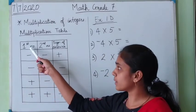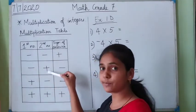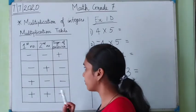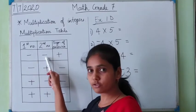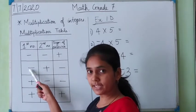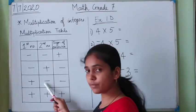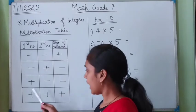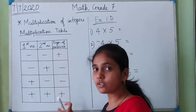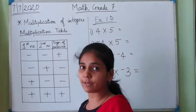In the multiplication table, we have the sign of the first number, the sign of the second number, and the sign of the answer. If the first number is negative and the second number is also negative, then the sign of the final answer will be positive. If the first number is negative and the second number is positive, then the final answer will be negative. Similarly, if the first number is positive and the second number is negative, the final answer will be negative. And if both the numbers are positive, then the answer will also be positive. There is no operation column here — we are multiplying the numbers.